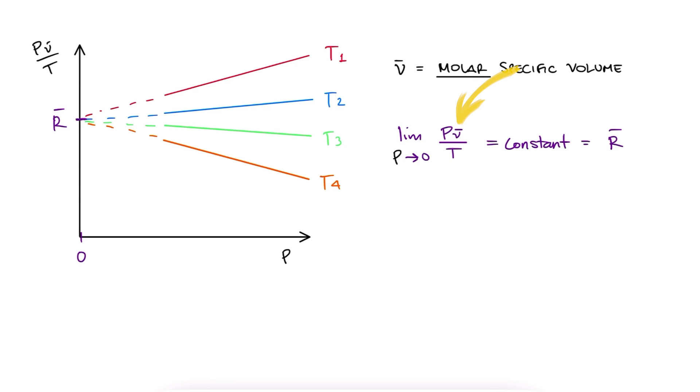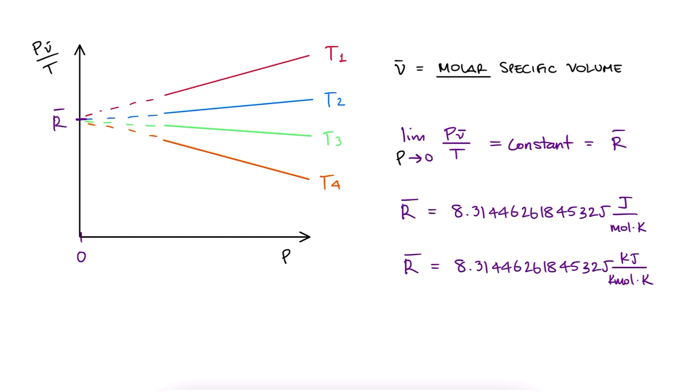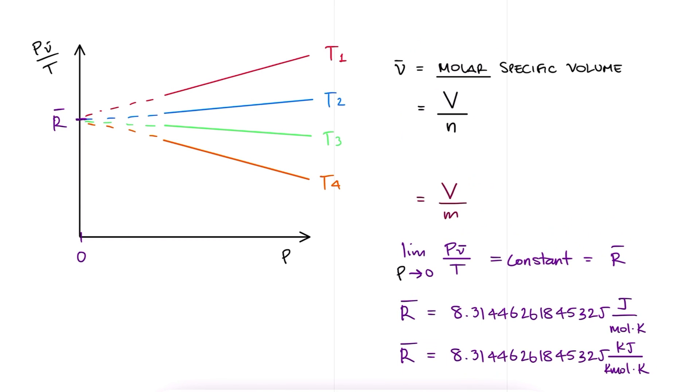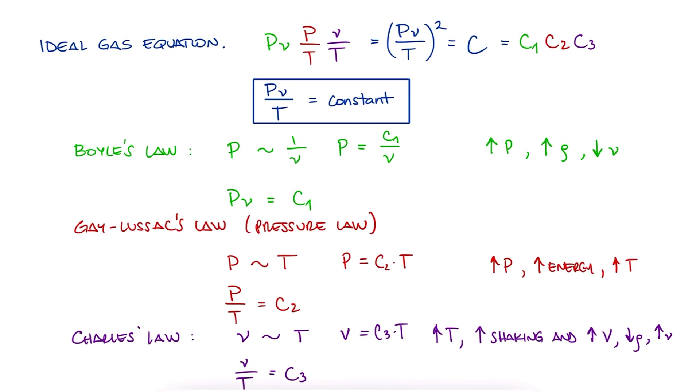Notice we're using the molar specific volume V bar, not just V, and therefore the value for R is R bar, in joules per mol kelvin or kilojoules per kilomol kelvin. That's per mole, not per kilogram. Since molar specific volume is the volume divided by number of moles, as opposed to volume divided by mass, we can write this ideal gas equation as PV equals nRT. This is probably the version you're most familiar with from high school chemistry or physics.